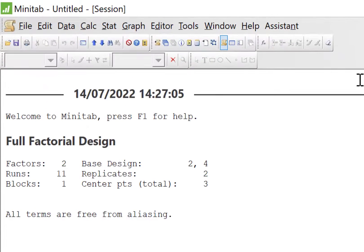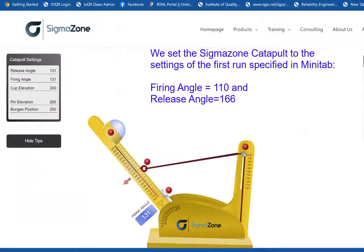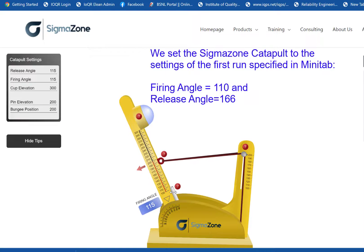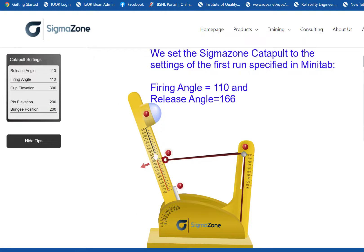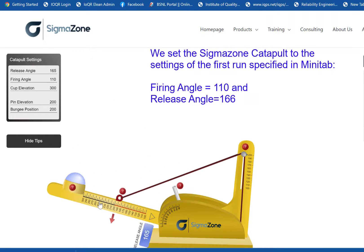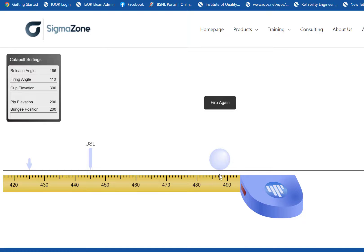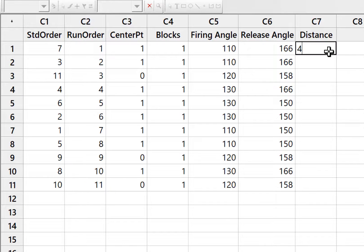A design with two replicates and three center points is created by Minitab. Now we add a column for a response which is the distance so that we can record our observations when we run the experiment. We now set a sigma zone catapult to the settings of the first run specified in Minitab. Firing angle is 110 and the release angle is 166. And the throw distance for the first run can be measured as 487.5.